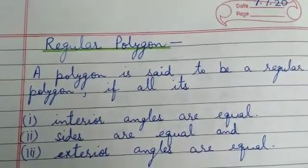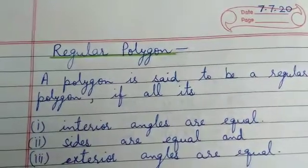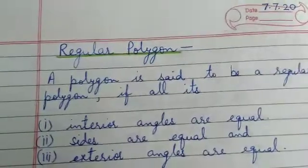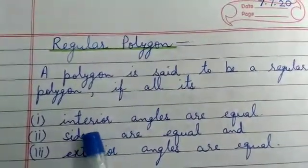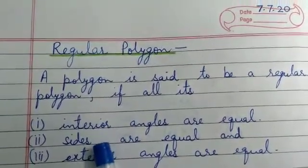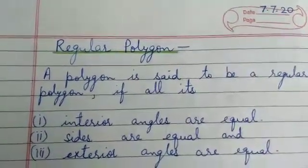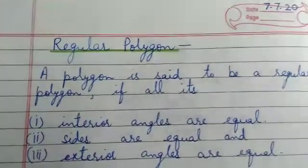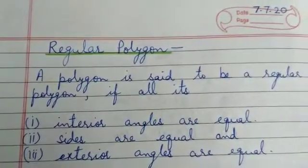We had already discussed about a polygon — a polygon is a closed figure, a bounded figure bounded by line segments. A regular polygon is a polygon whose each interior angle is equal, each side is equal, and each exterior angle is equal. That type of polygon is called a regular polygon.